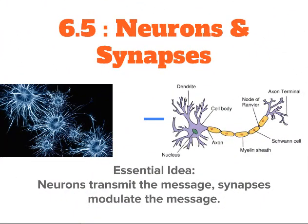Welcome. We're going to be talking about 6.5 neurons and synapses. The essential idea is that neurons transmit the message, but synapses modulate that message. Some of you have had this in psychology already, so it'll be a nice recap, and others are getting this for the first time. It's a lot of information packed tight.